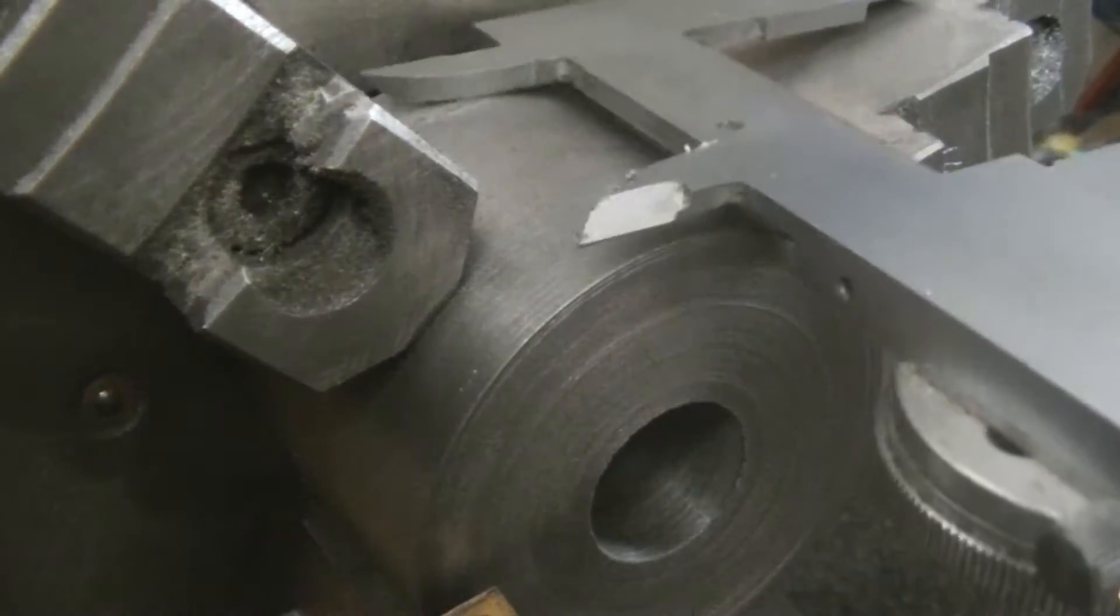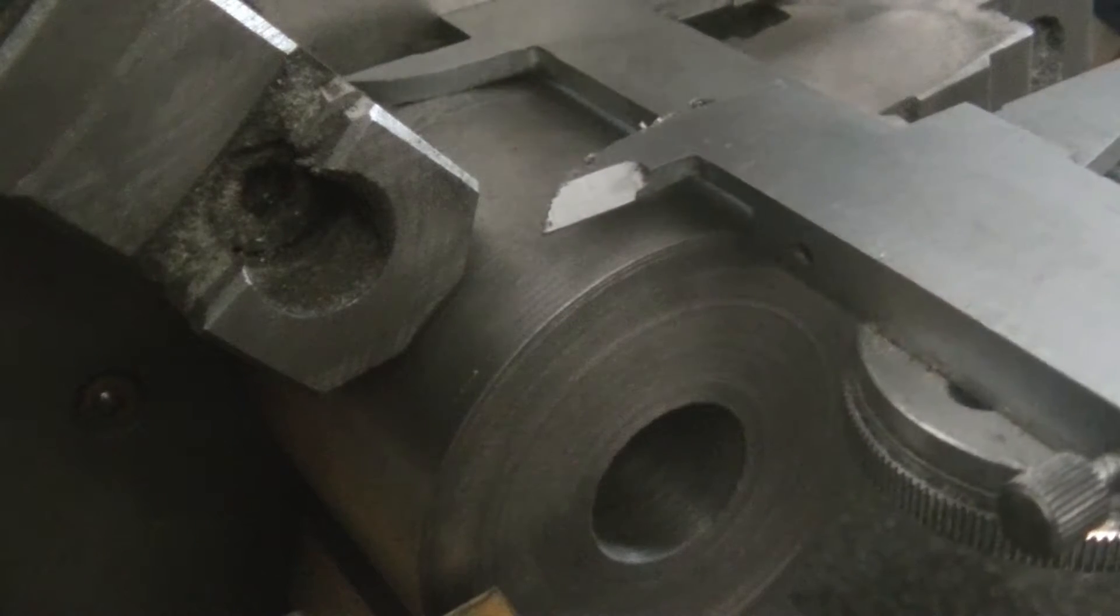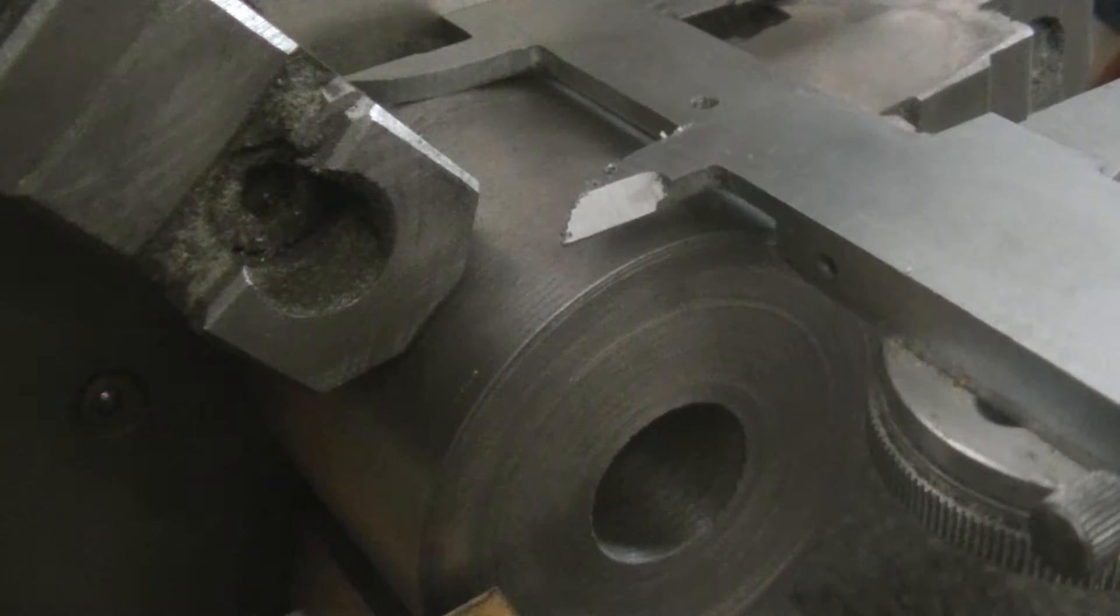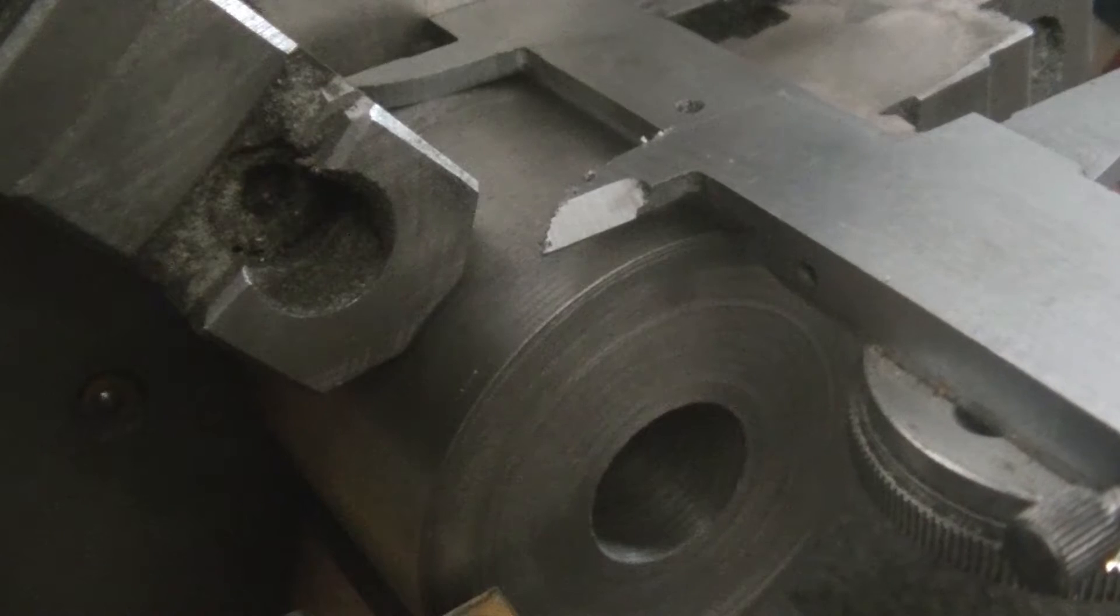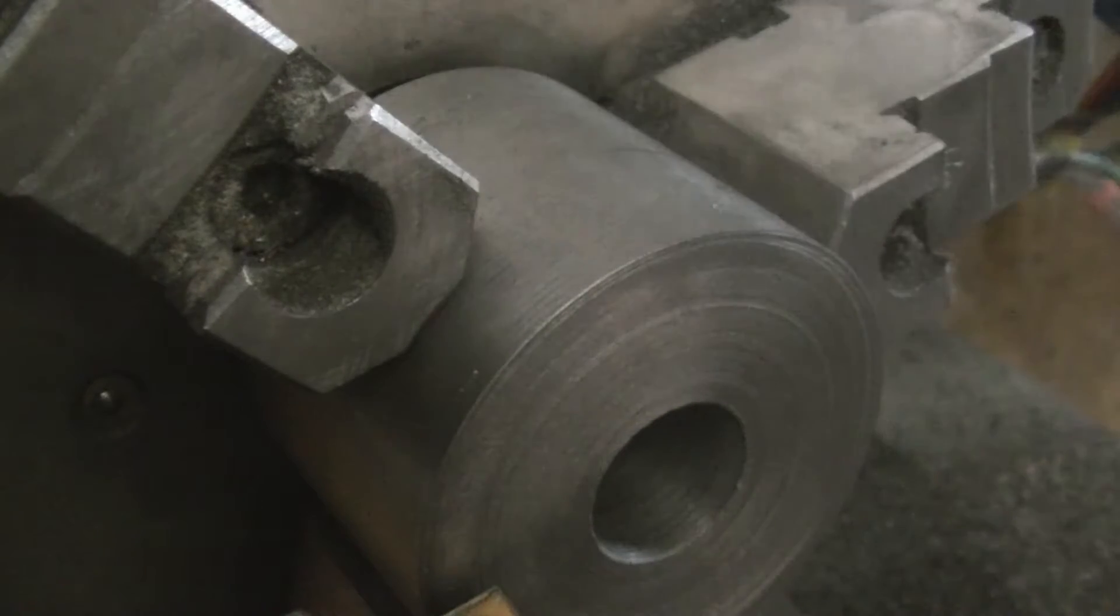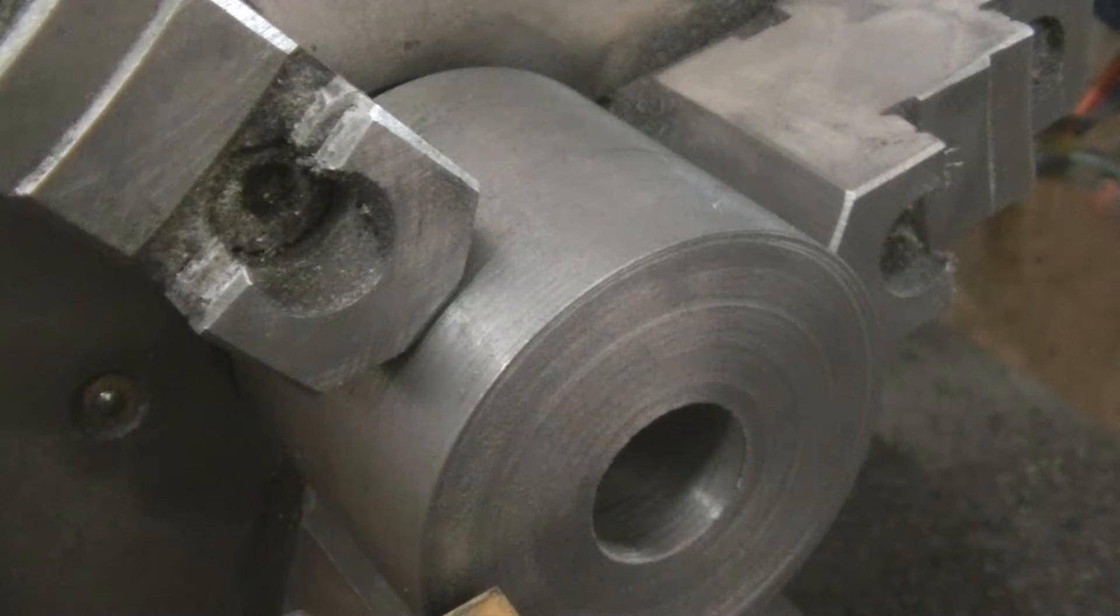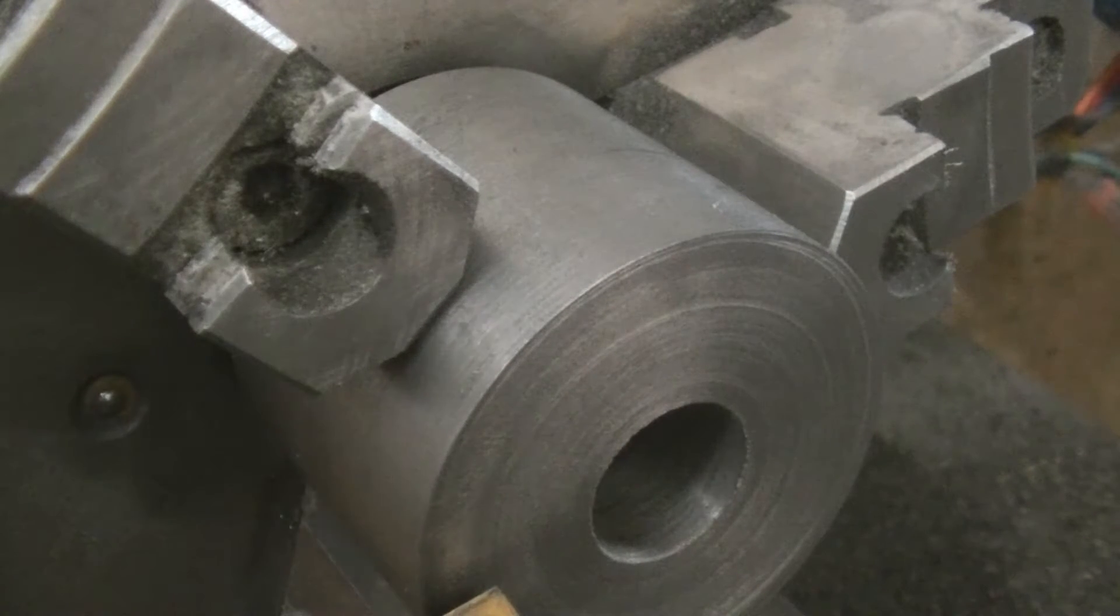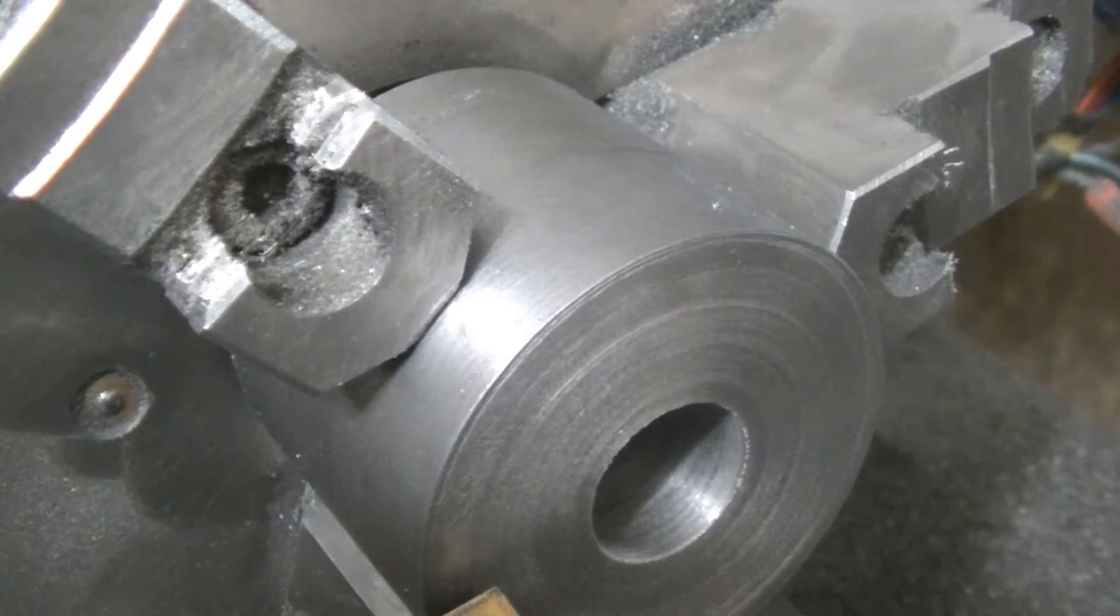So we have it flipped around in the chuck, and this isn't a critical measurement. But this is about, let's see, 35—need like 85 thou off the front.